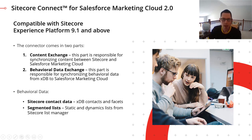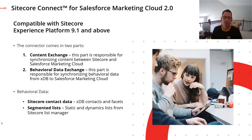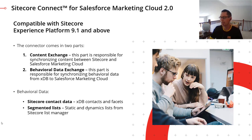When we dig into behavioral data exchange, we see there are two different types of data being pushed from Sitecore to Salesforce Marketing Cloud. The first is Sitecore contact data — XDB contacts and their associated facets pushed up. The second is segmented lists: static and dynamic lists from Sitecore's List Manager being pushed up for use in Salesforce Marketing Cloud.